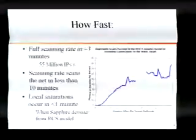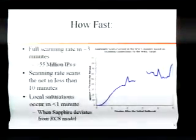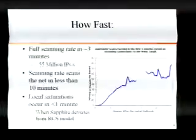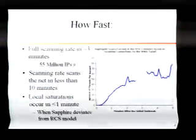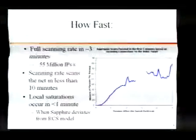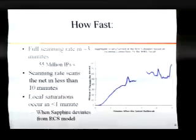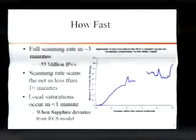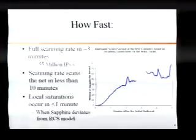So how fast was it? This data is scaled from one particular slash-16 where we have a full trace. The gap is where a router temporarily decided to stop forwarding packets. The scanning rate is scaled to represent how many scans are going across the Internet. Within three minutes, Sapphire went from nothing to scanning the net at 55 million IP addresses per second. At that scanning rate, you obviously scan the net in less than 10 minutes. We also started to see local network saturations — multiple infections not increasing the speed of the worm — within one minute.